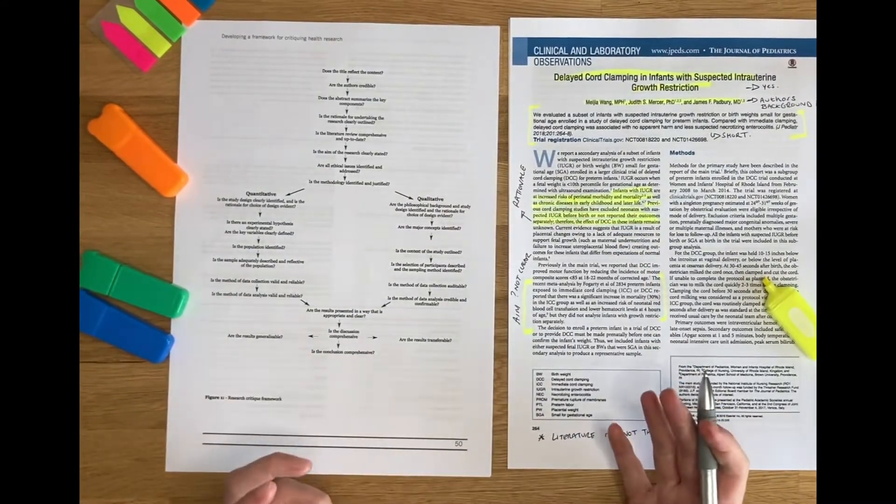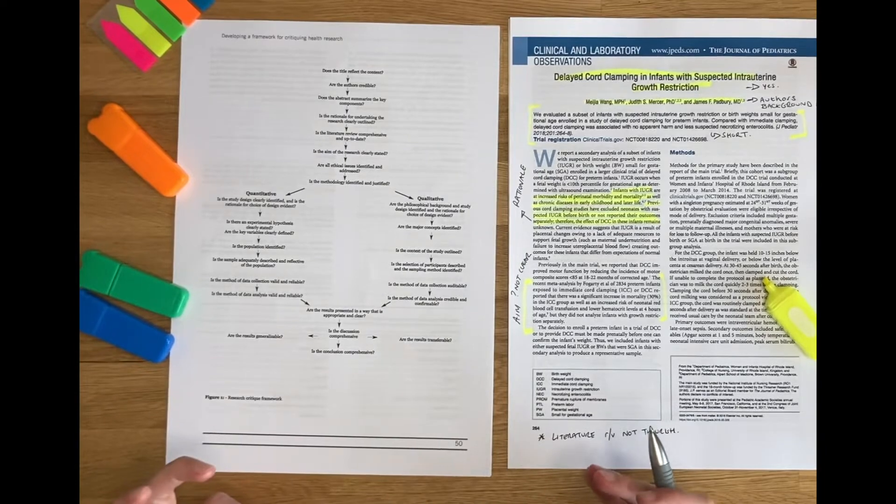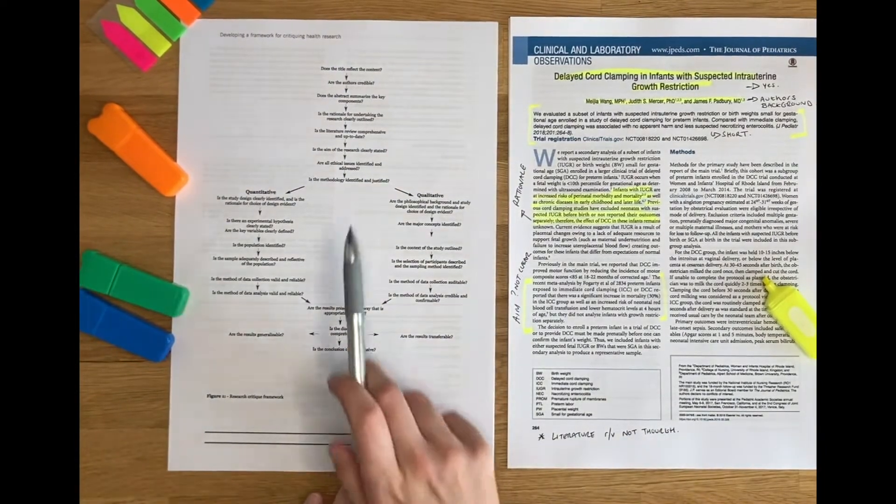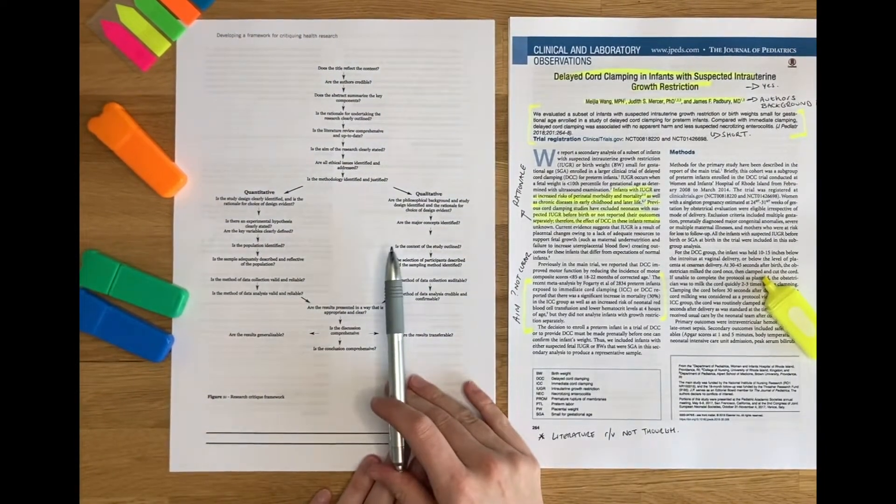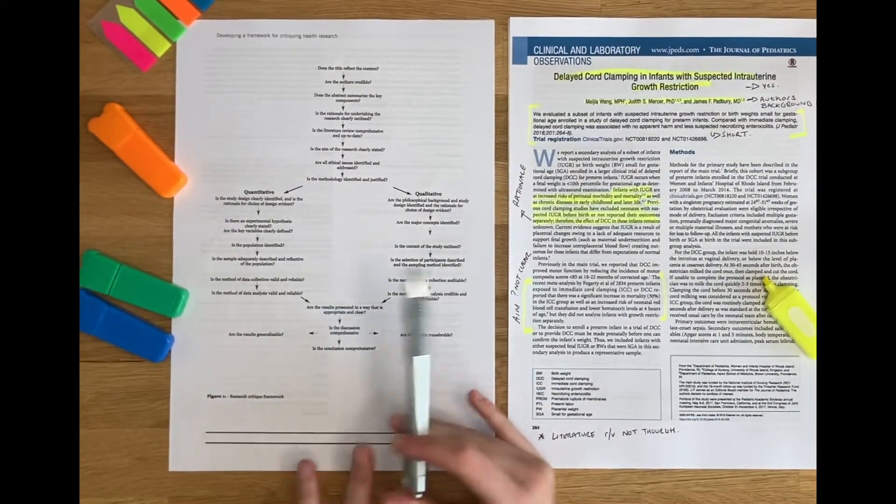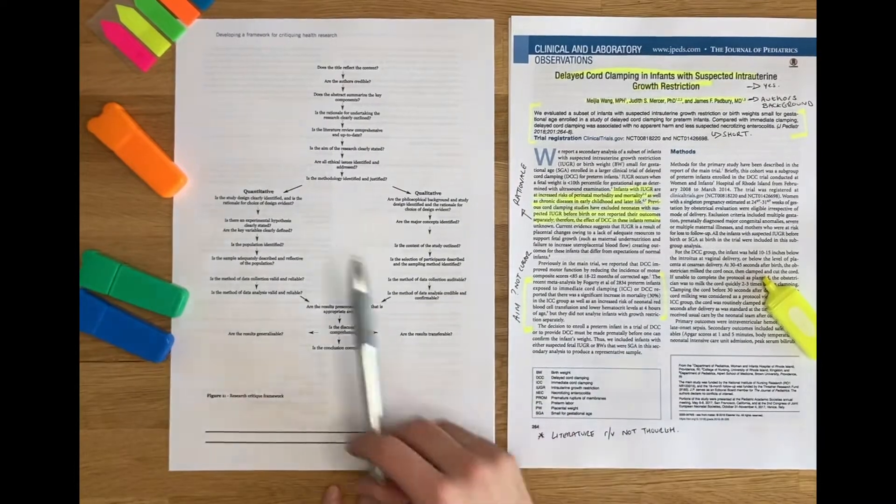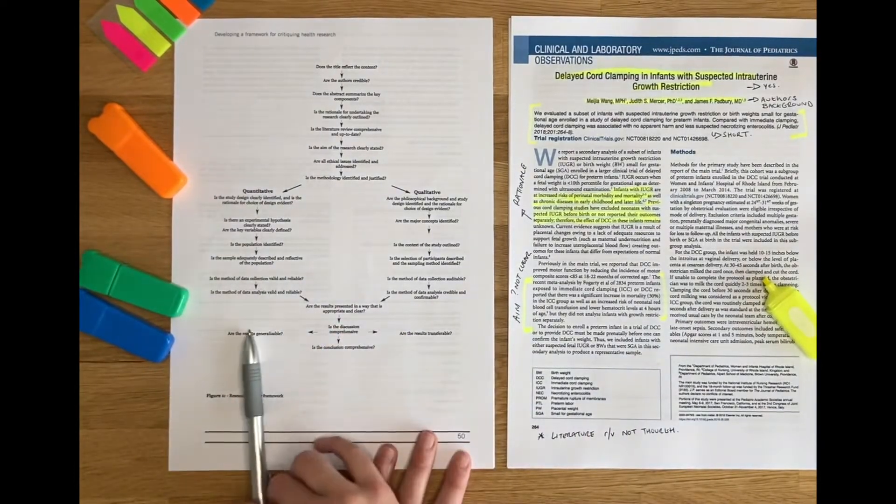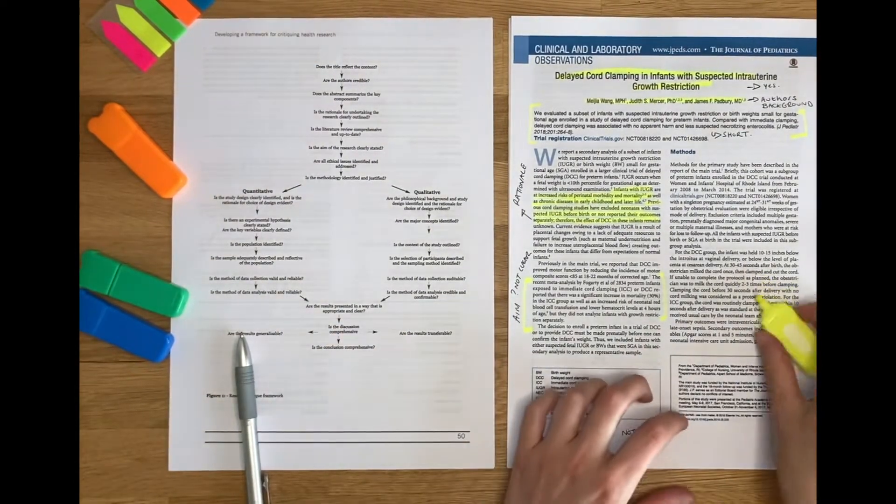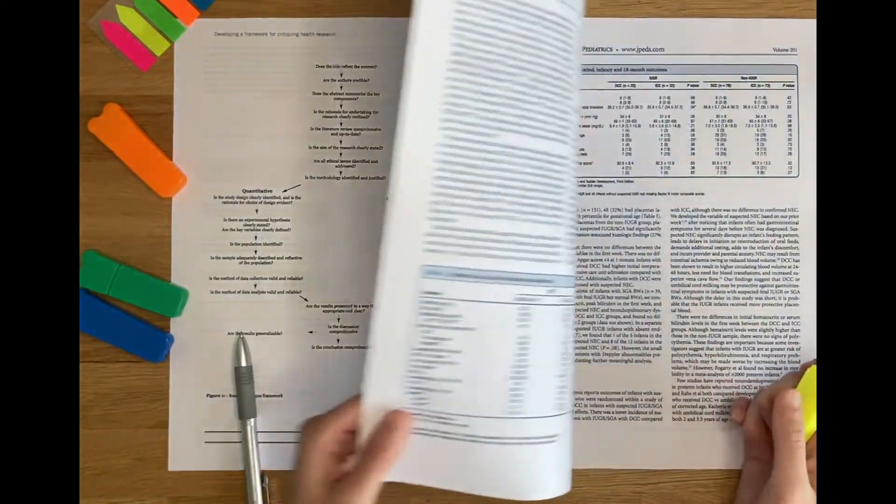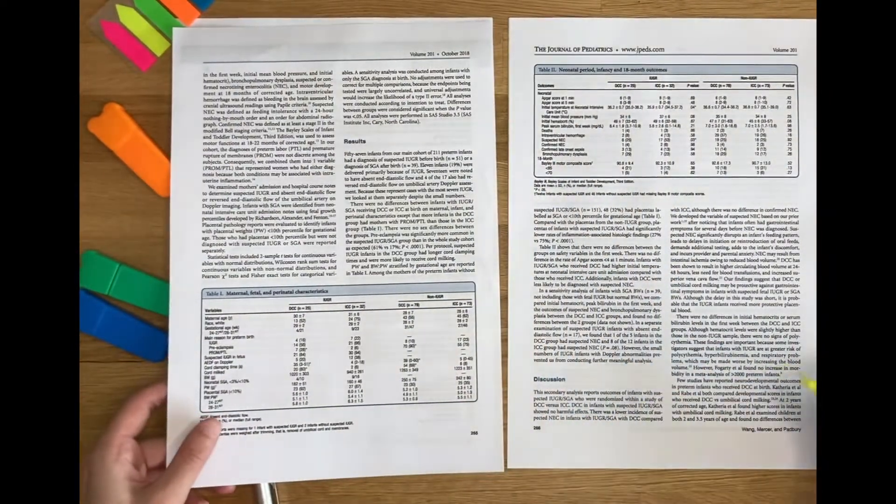So you're going to repeat this process throughout the whole of the paper. Make sure you follow the right arm of the framework. So you'll need to be able to tell if your paper is quantitative research or if it's qualitative research. This paper is quantitative, so I'll go down the quantitative arm.